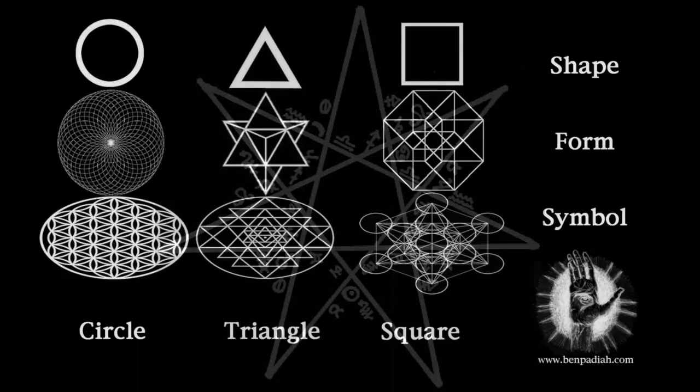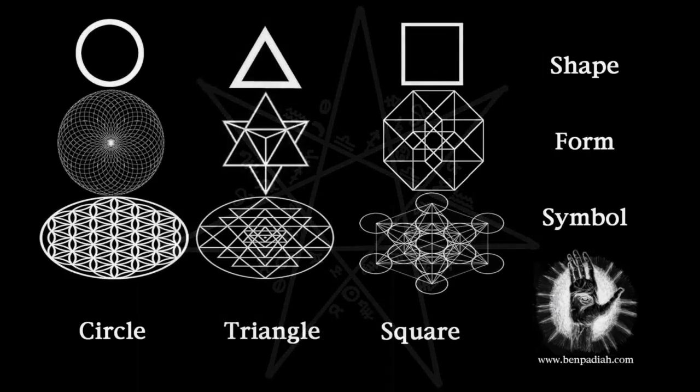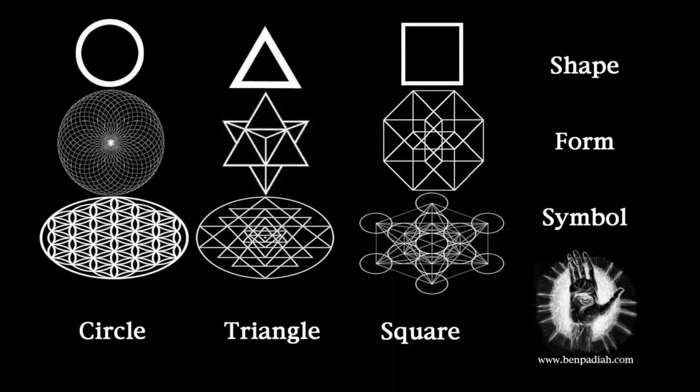From these three most essential shapes in 2D Euclidean plane space, the circle, the triangle, and the square, can be extrapolated their fourth spatial dimensional counterparts in the forms of the torus, the stelloctahedron, and the tesseract.